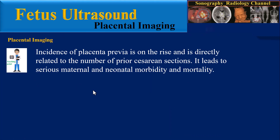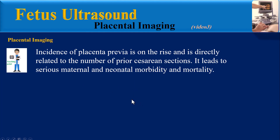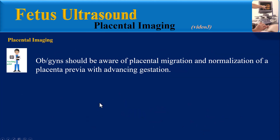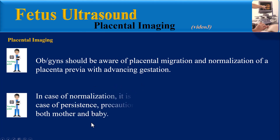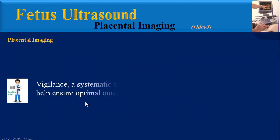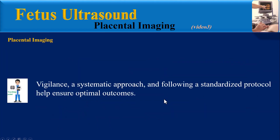Final teaching points: Incidence of placenta previa is on the rise and is directly related to the number of prior cesarean sections, leading to serious maternal and neonatal morbidity and mortality. Screening all patients and properly determining placental location using transvaginal sonography beyond 16 weeks is critical. Clinicians should be aware of placental migration and normalization with advancing gestation. In case of normalization, screen for vasa previa; in case of persistence, take precautionary steps to safeguard both mother and baby. Vigilance, a systematic approach, and a standardized protocol help ensure optimal outcomes.